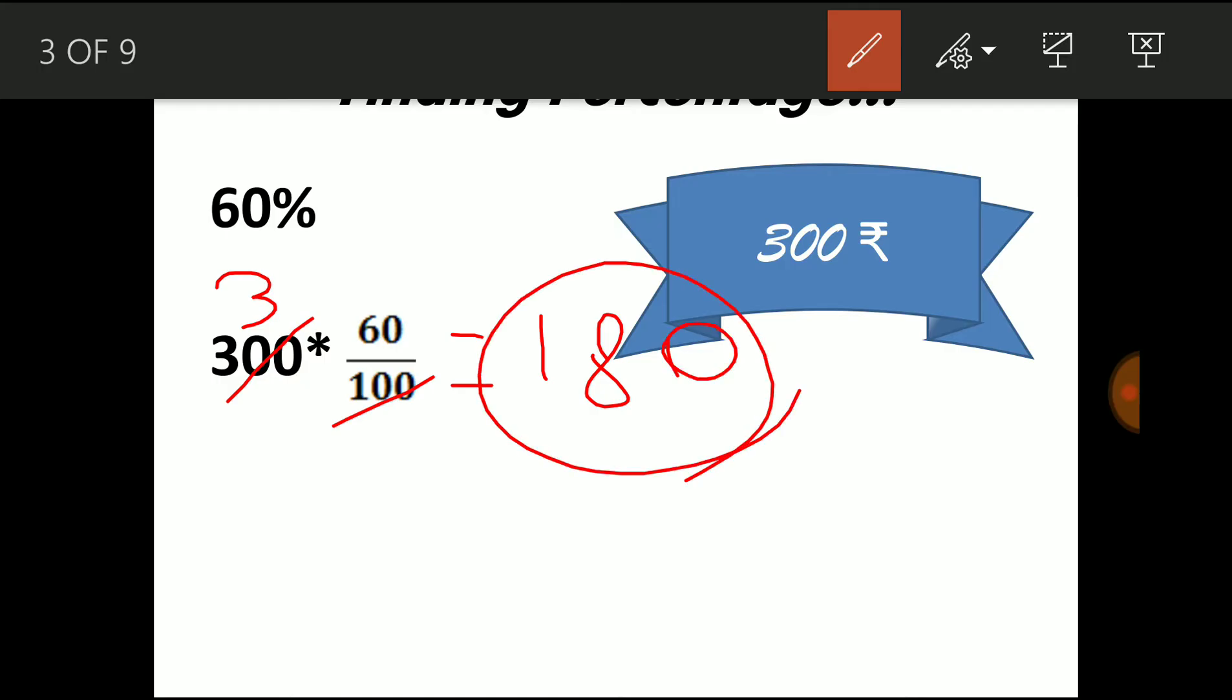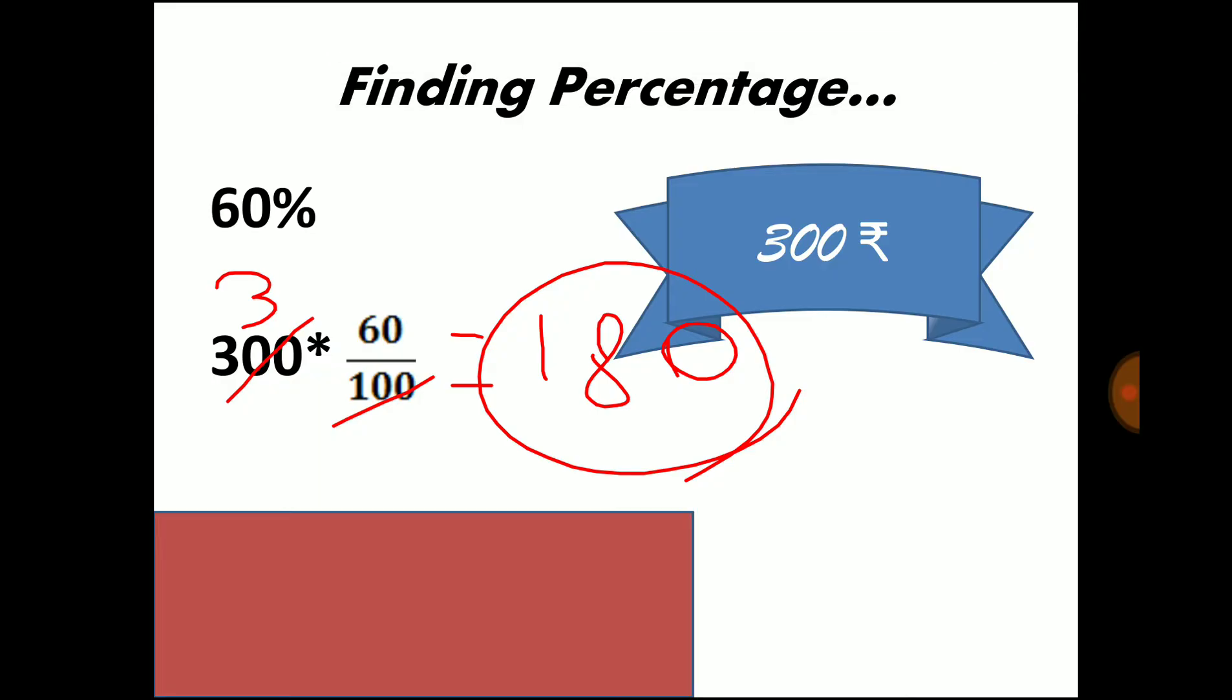So you have to give 180 rupees to your friend which is 60% of 300. So instead of 60%, if he asked 2%, you have to write 2 by 100. So 2 by 100 into 300 gives you 6 rupees. So 6 rupees is 2% of 300. So these values are quite simple. Instead of this 60%, if you have something like 12.5%, you can make it as 12.5 by 100. It consumes lot of time. So for these type of problems, I have some shortcuts.